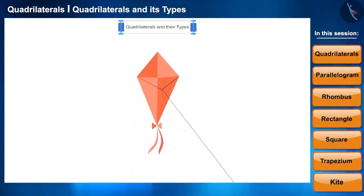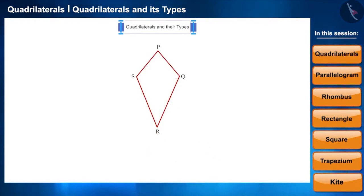Friends, you must have seen the kite. It looks like this. Its sides are not parallel. There are two pairs of adjacent sides whose lengths are equal. Such quadrilaterals are called kite. Its one diagonal bisects the other diagonal at right angle.